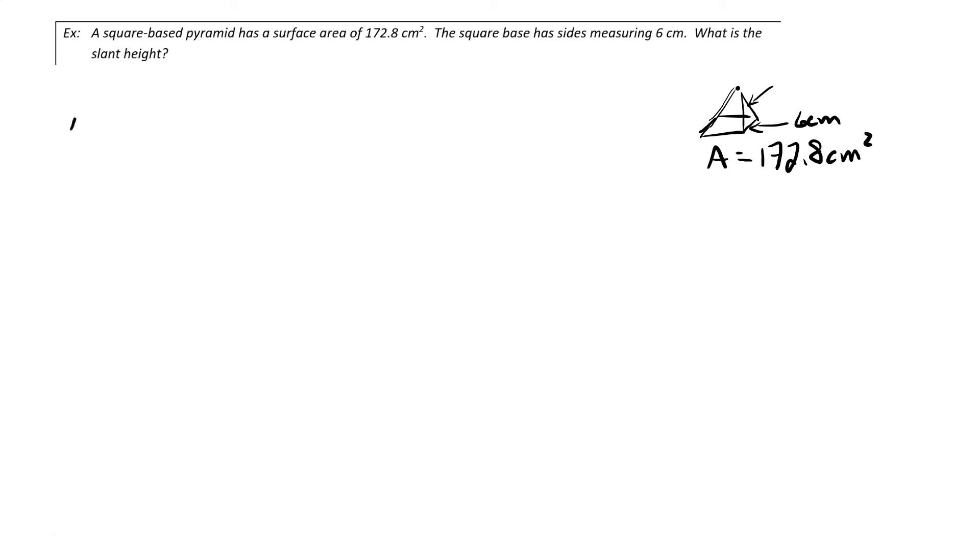We remember that the surface area for a square-based pyramid is the area of the base plus the lateral area. The area of the base is going to be 6 times 6, and the lateral area is the perimeter of the base times the slant height divided by 2. So we've got 36 plus the perimeter of the base, which I know is 4 times 6.